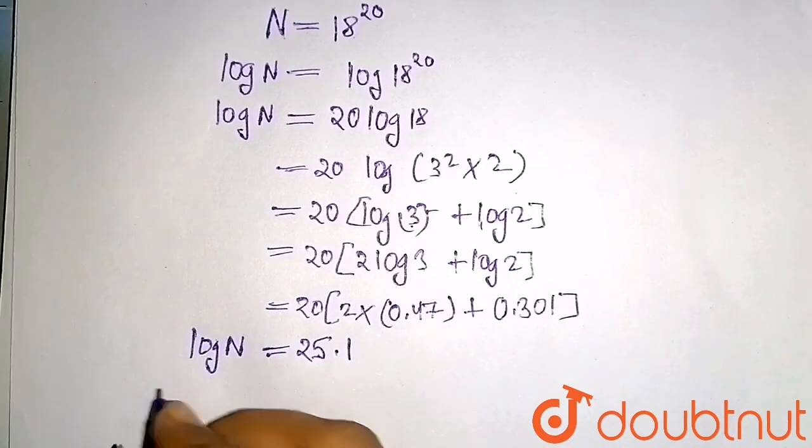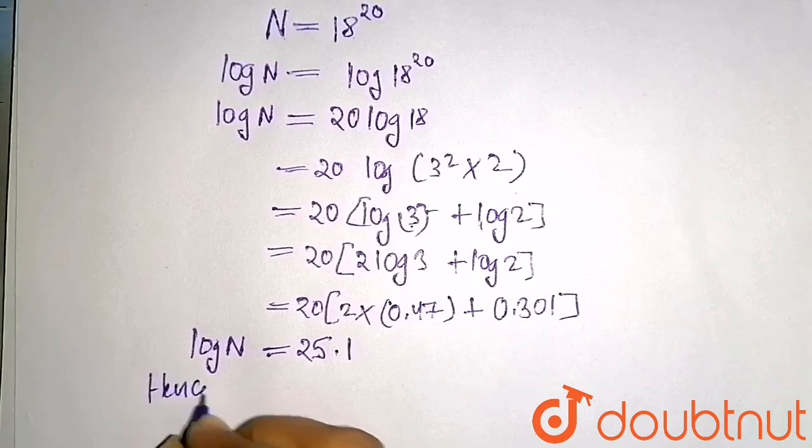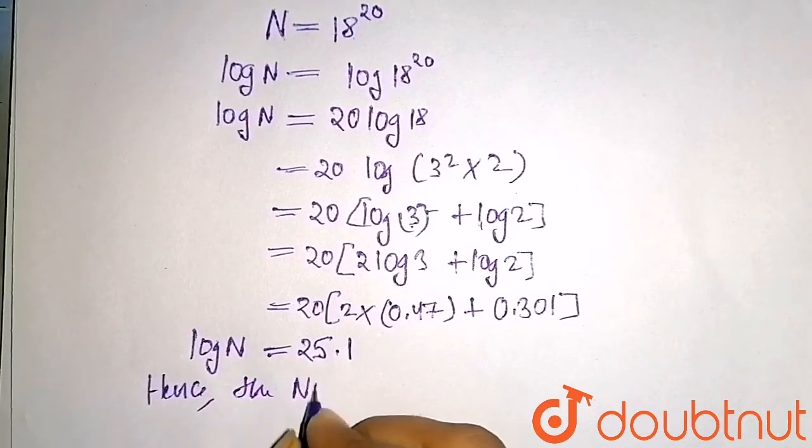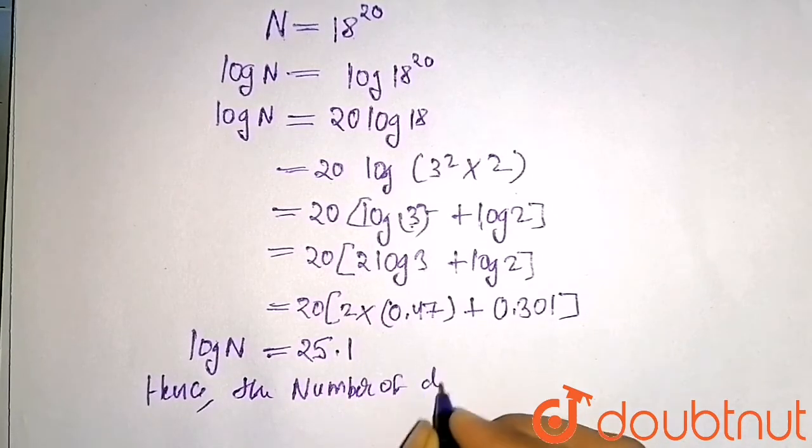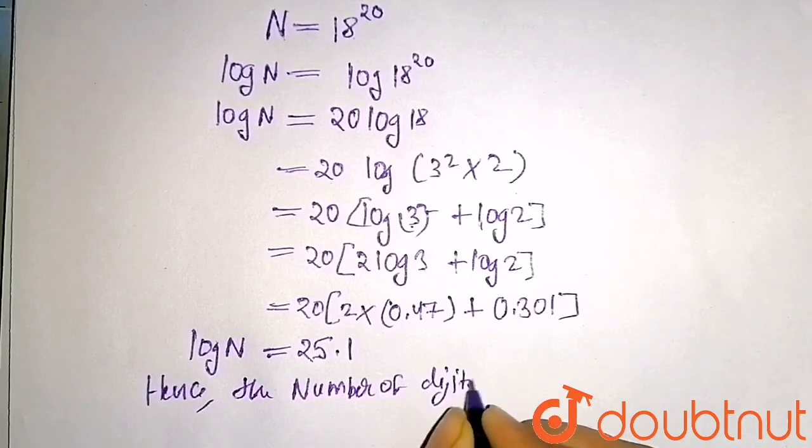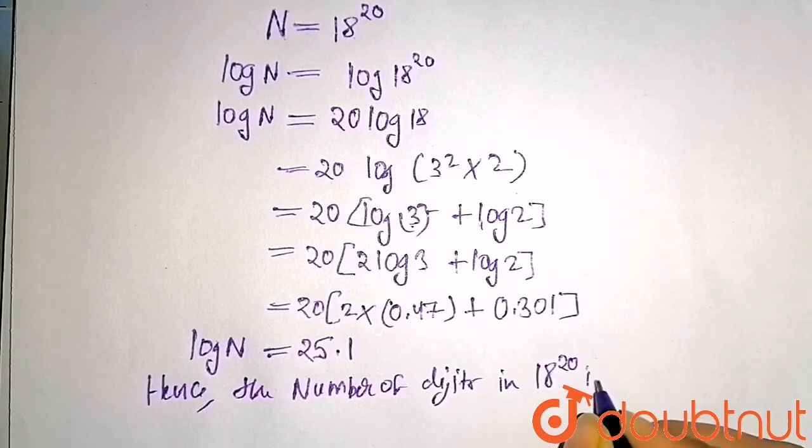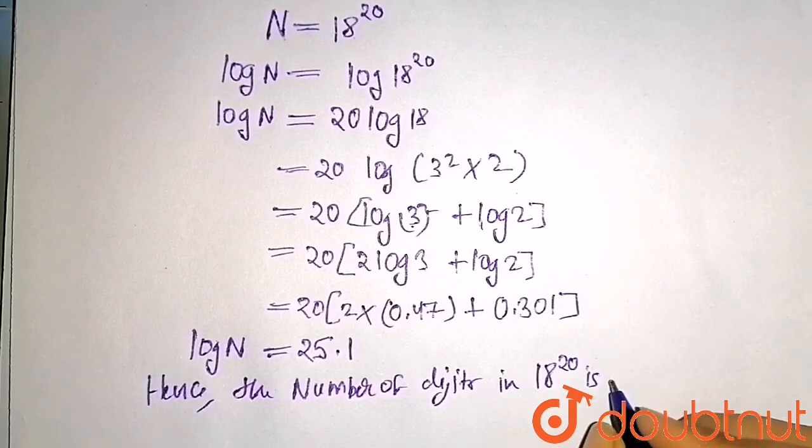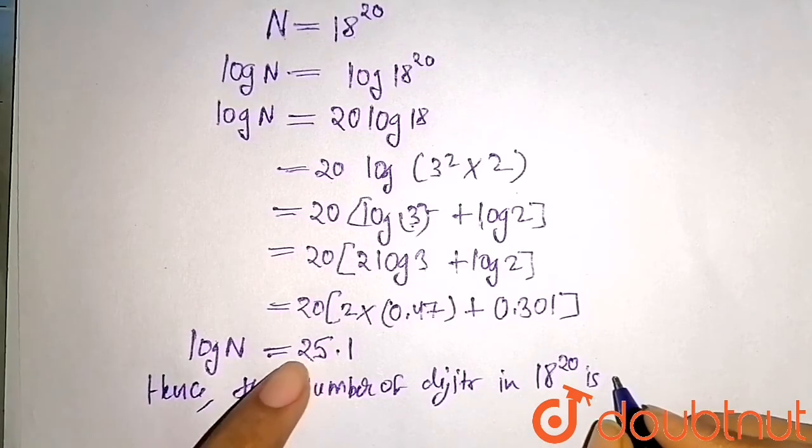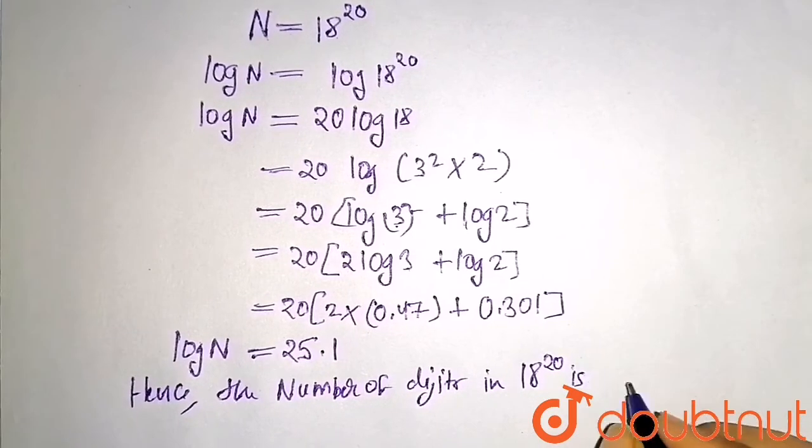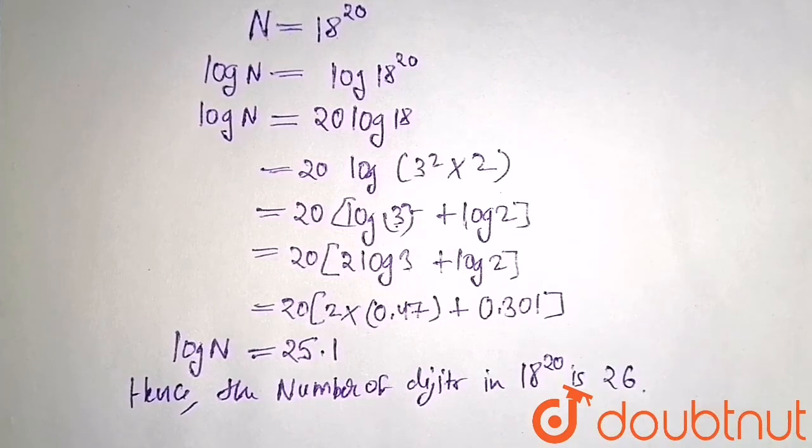Hence, the number of digits in 18 to the power 20 is 26. You have to write in round figure, so I am writing it as 26. I hope you understand the question, thank you.